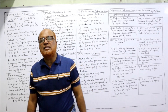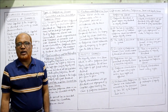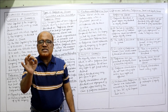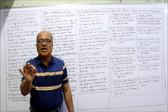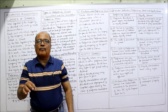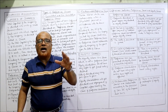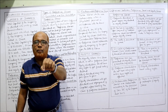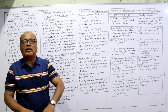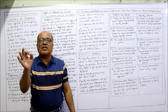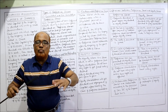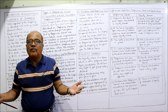Now, the differences between preference shares and equity shares, which are frequently asked in examinations. First, preference dividend is paid before any dividend is paid to equity shareholders. Second, at the time of liquidation, preference share capital is repaid first; only if any amount is left will equity capital be returned. Third, the rate of dividend on preference shares is fixed and will not change, whereas the rate on equity shares will vary — more profit means more dividend, less profit means less dividend, no profit means no dividend for equity shareholders.